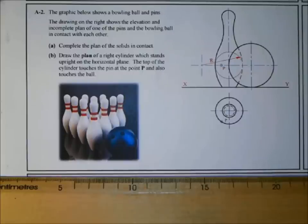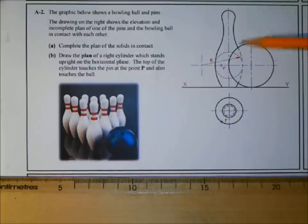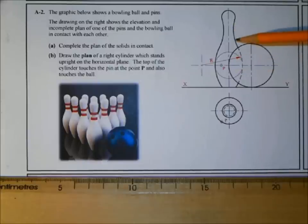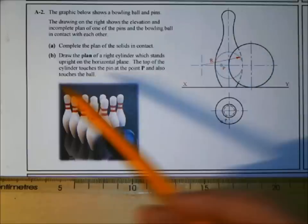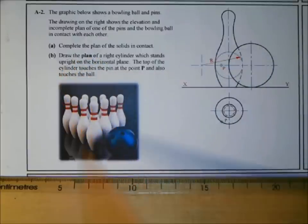This is a solid contact question that comes up a few times in the short questions. It hasn't appeared as a long question yet, but it's a nice topic. Looking at the elevation, we have the bowling ball in contact with the pin. The pin is an irregular shape, but as you can see from the red circle, it's based on a sphere — a circle or cylinder.